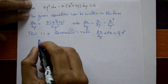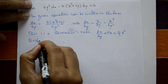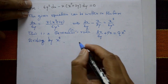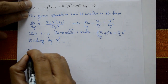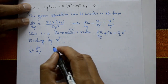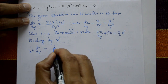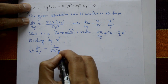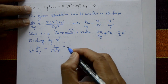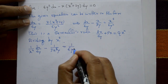Here x to the n means x to the 4. Throughout this equation, dividing by x raised to 4, we get: 1 upon x to the 4 times dx by dy, minus 1 upon 3x cubed y, is equal to 1 upon 6y squared.